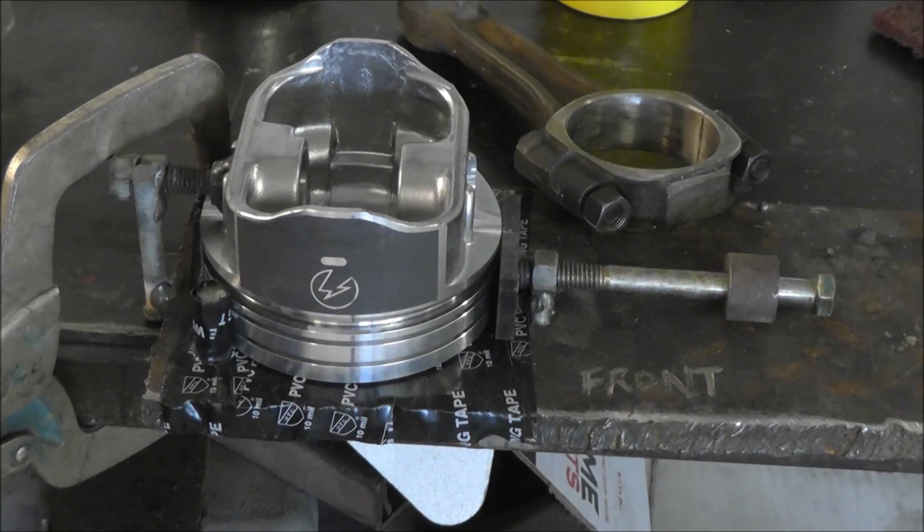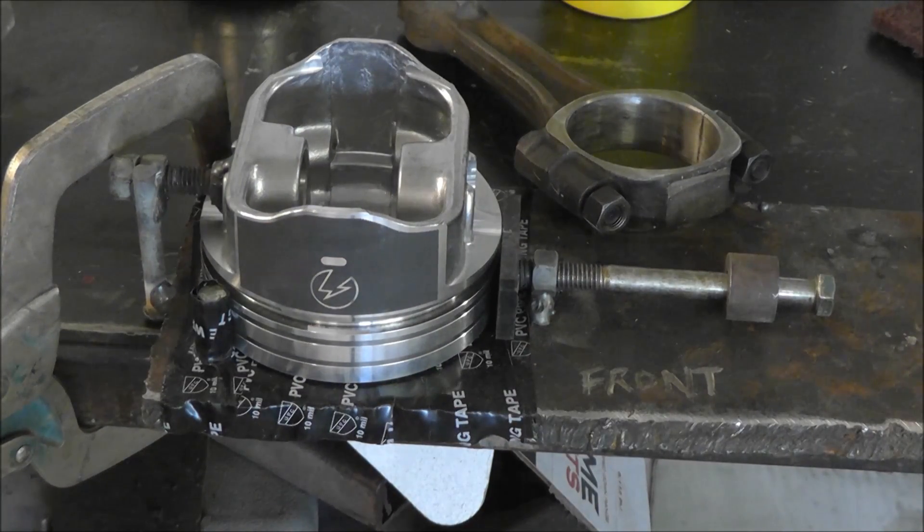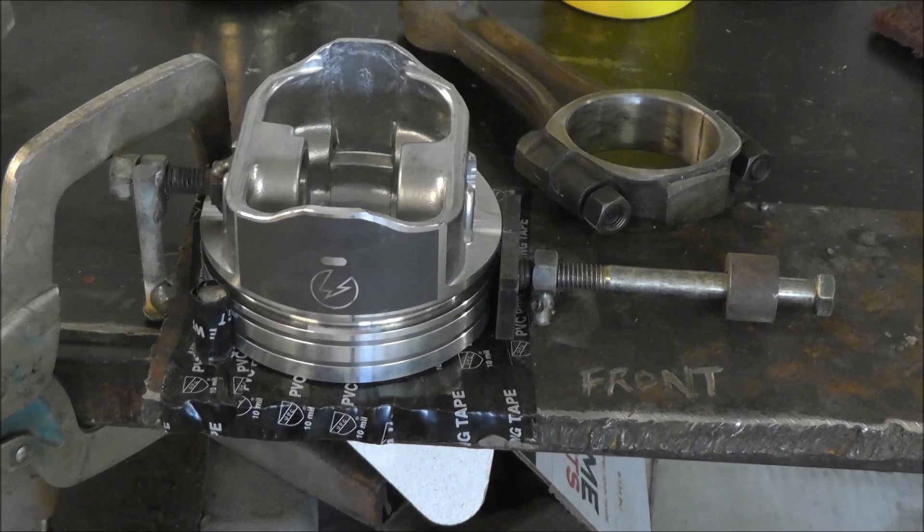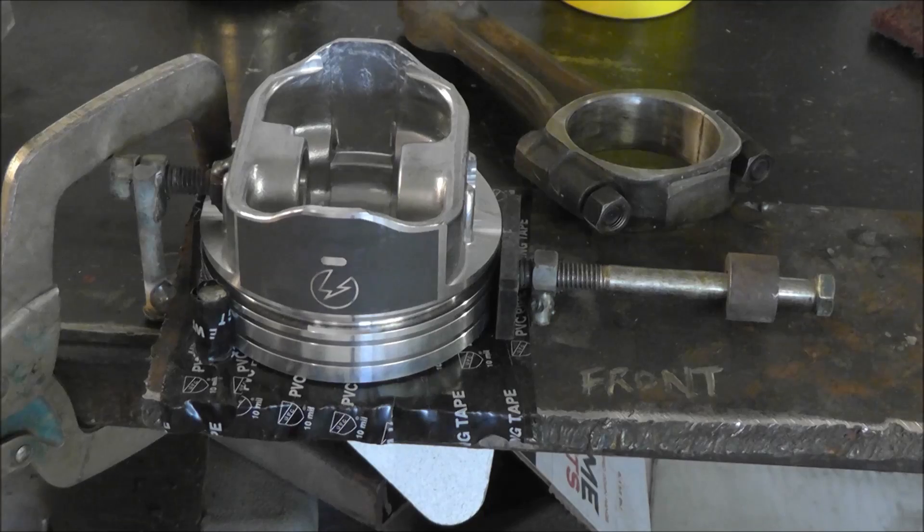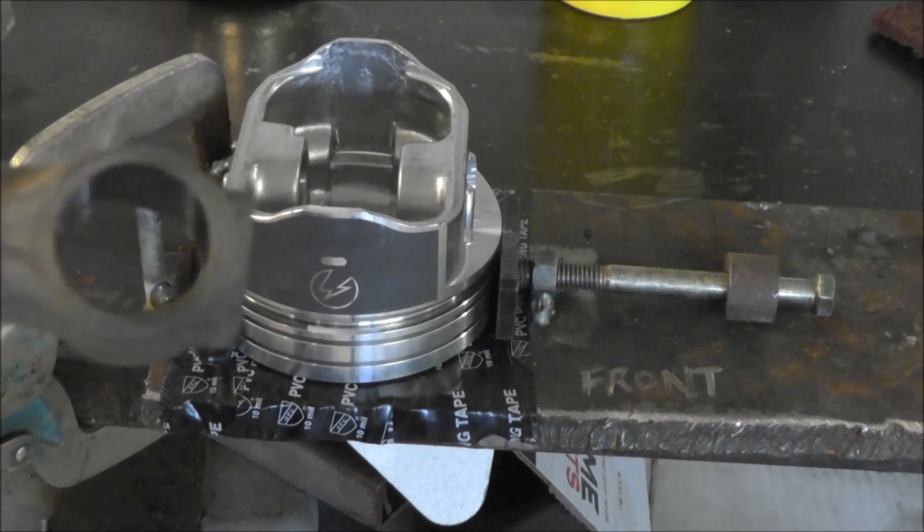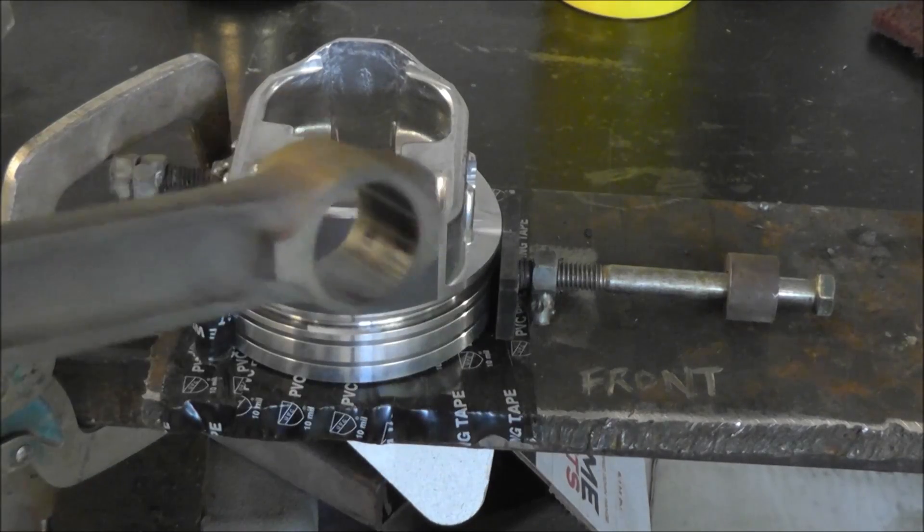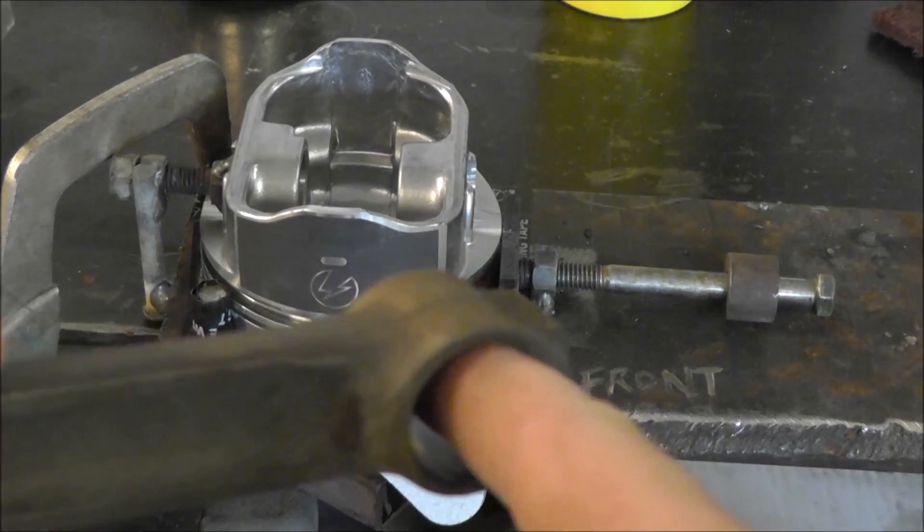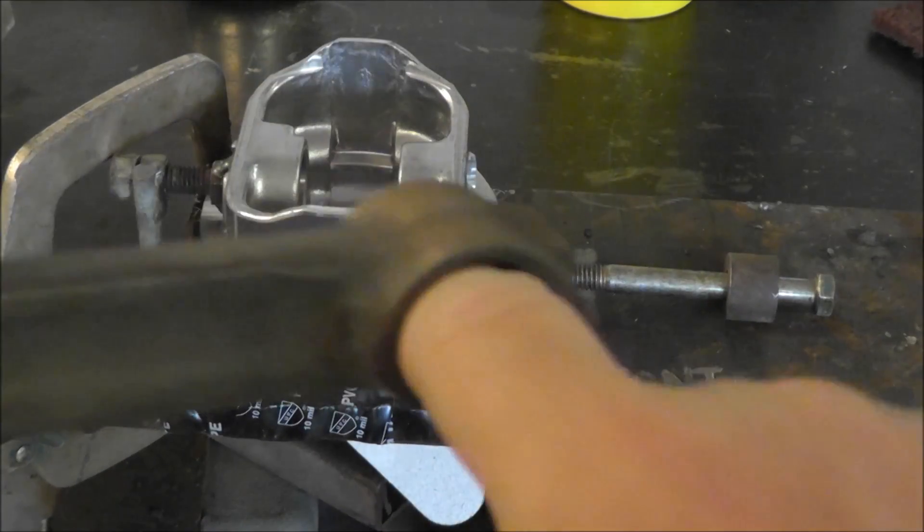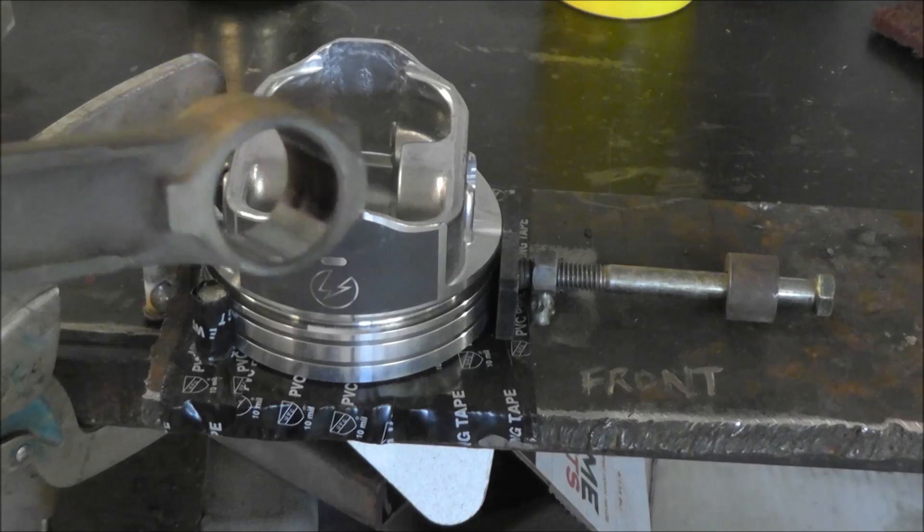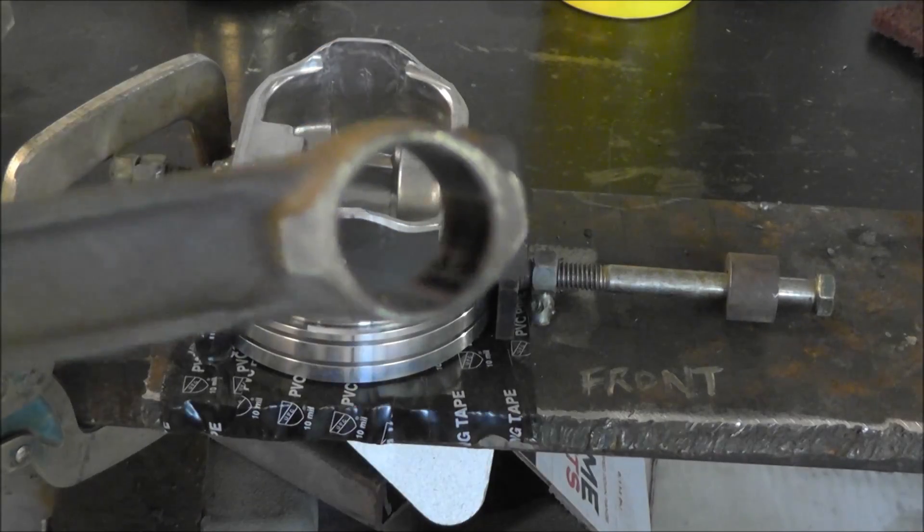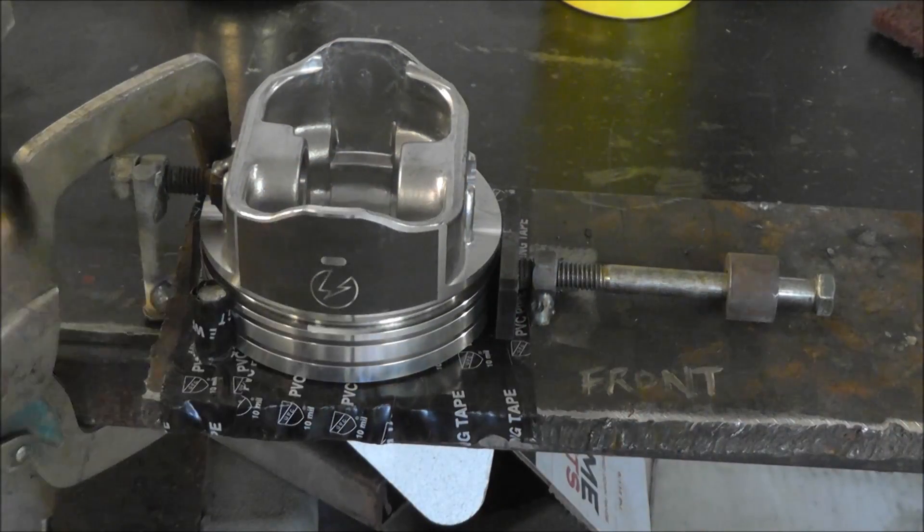So it's a pretty quick operation. I got some map gas here in my little torch setup, and it only takes a couple of minutes to heat the small end of the rod up. Essentially what you do is take a scotch-brite pad and clean this up so it's nice and silver shiny, and then I'm going to heat it up until it just goes blue and then you drop it in, put the wrist pin, and push it in all the way and it's done.